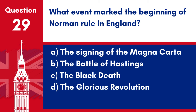Question 29. What event marked the beginning of Norman rule in England? a. The signing of the Magna Carta. b. The Battle of Hastings. c. The Black Death. d. The Glorious Revolution. Answer: b. The Battle of Hastings. The Battle of Hastings in 1066 marked the beginning of Norman rule in England.